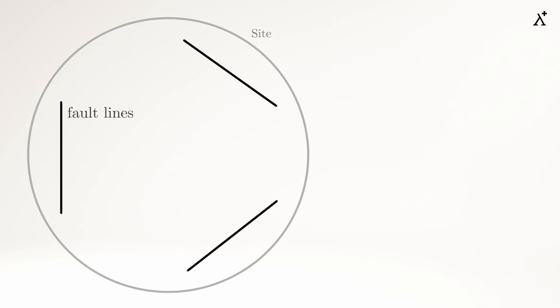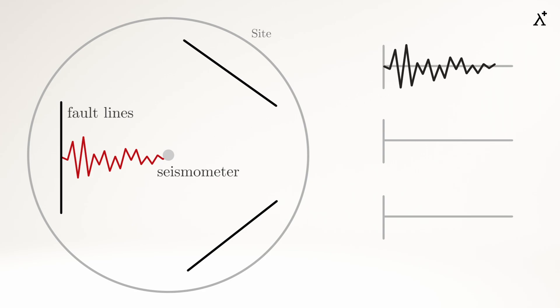Earthquakes happen due to movement of ground along the fault lines. This movement results in a release of energy that travels through the Earth in the form of waves. It is recorded at a particular site with the help of a seismometer. The seismometer gives us a record of the movement of the ground in terms of displacement, velocity, and acceleration over time. This record is termed as time history.